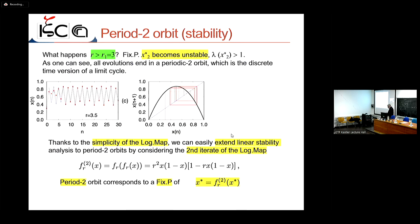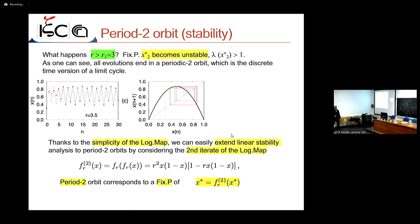Something new happens when the control parameter R becomes greater than or equal to 3. The iteration shows oscillatory behavior: there is a limit cycle of period 2. There is a bifurcation from a stable fixed point to a limit cycle of period 2.